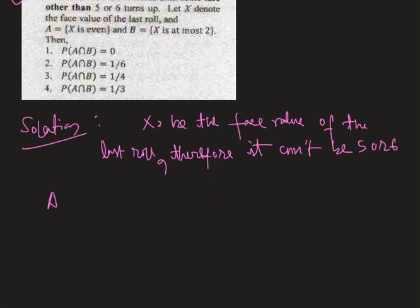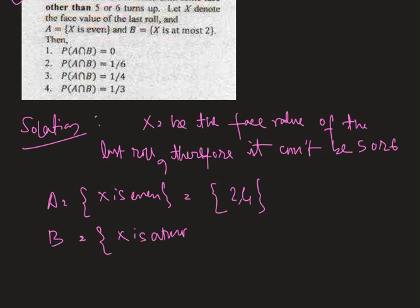Now A be the event which denotes that X is even. Therefore, we are left with the result 2 and 4, because 6 cannot be included. And B be the event which denotes that X is at most 2. Therefore, it will be 1 and 2. Hence the intersection of these two events is only 2.